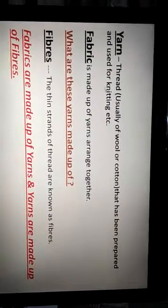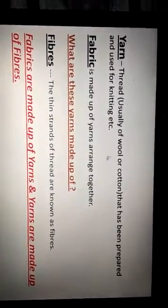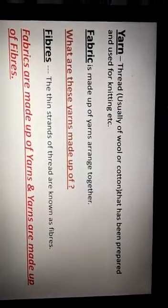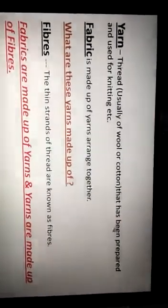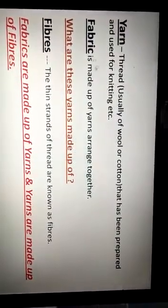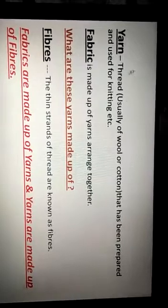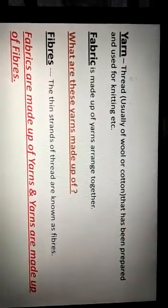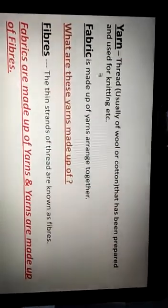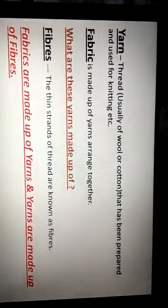The first term is yarn, that is thread. When I say thread, threads are generally made from wool or cotton, since in this chapter you will be dealing with natural fiber. Thread that has been prepared and used for knitting is known as yarn. When these yarns are joined together — for example, lots of cotton threads joined together — they start making fabric by knitting, by stitching, and different processes. So fabric is made up of yarns arranged together.